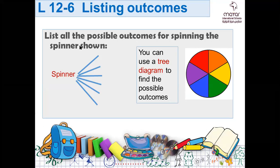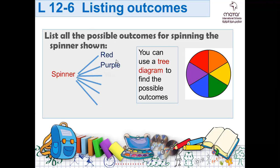If we spin this spinner, we can have red, orange, yellow, green, blue, or purple. Yes, this is how we list the outcomes. If we have just one spinner, it's easy to list the outcomes — just tell me the colors, or the names, or whatever it has.